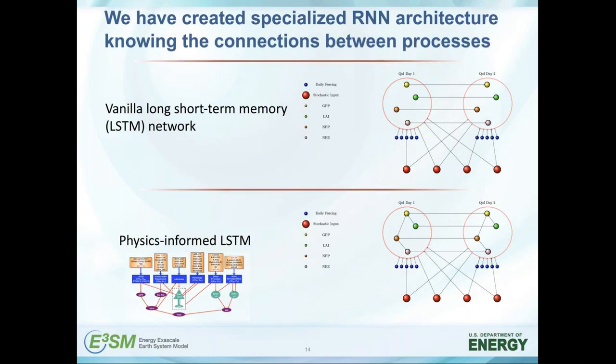The standard recurrent neural network — long short-term memory, LSTM — architecture works fine. But for this simplified ELM model, we can go one step further because we can look under the hood and know how processes impact each other. So the recurrent neural network architecture can be informed with proper connections that makes training easier and ultimately makes the surrogate constructed by this recurrent neural network more accurate.